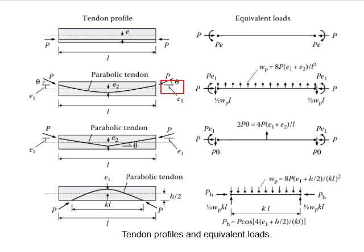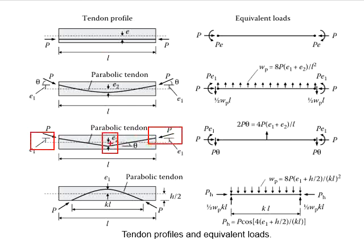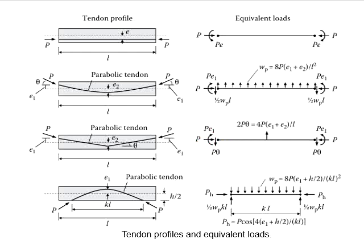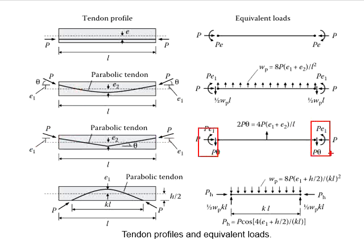Also, because of the eccentricity at the support, there will be a moment acting at the end of the section. If we arrange the tendons in a V-shape, with straight lines, negative moment at the support and positive moment at the midspan — because of the inclined force, there will be a horizontal force and a vertical force acting on the member. At the tip of this V-shape tendon, it will generate a resistance force going upward, which is the summation of these two. So that it is in static equilibrium, and because of the eccentricity at the end of the support, there will be a moment acting on the member.